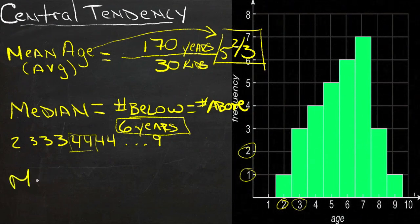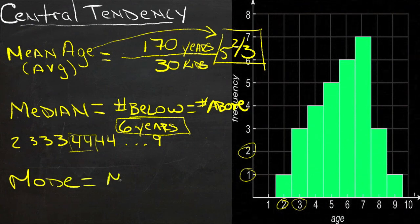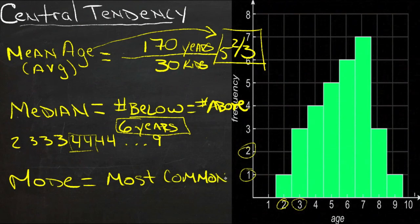So now the last thing, the last major central tendency is the mode. The mode is the most common number. In this table,